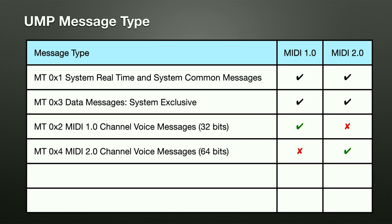MIDI 2.0 shares the system real-time, system common, and system exclusive data messages with MIDI 1.0 — they're identical. The difference is in channel voice messages: MIDI 1.0 channel voice messages are in 32-bit packets, while MIDI 2.0 channel voice messages are in 64-bit packets for more information. You can use MIDI 1.0 and 2.0 on the same transport, but you can't mix channel voice message types within a group — MIDI CI is how you negotiate which protocol a group uses.